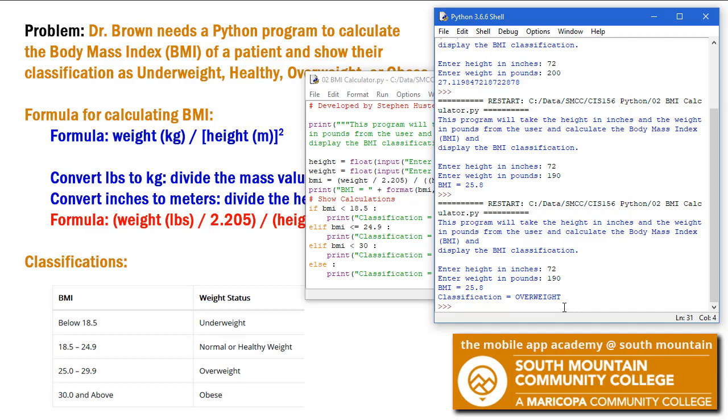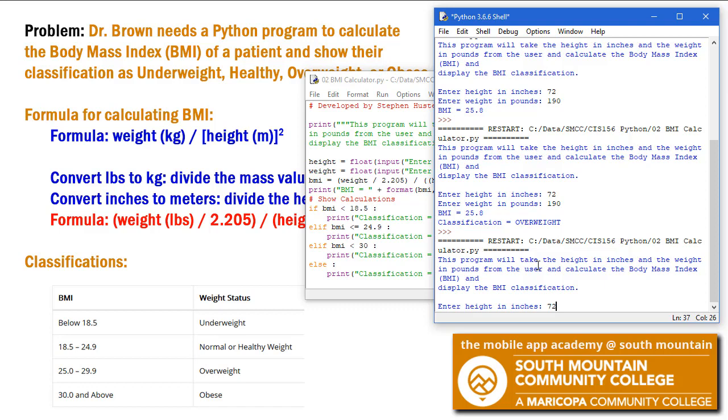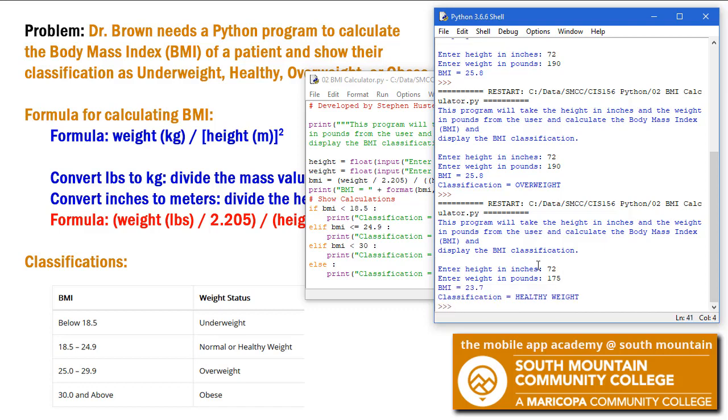Let's try this again. Again, I'm going to do 72. Let's say they lost some weight and they are now 175. BMI is 23.7 and they're in the healthy weight range.